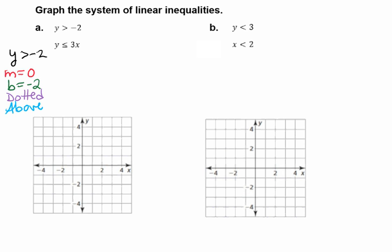For our second inequality, y is less than or equal to 3x. We have an m of 3, so our slope is 3, and we have a y-intercept of 0. Because we have a less than or equal to, that tells us we're going to have a solid line, because of that equal to symbol. And because it's less than, we're going to be shading below.